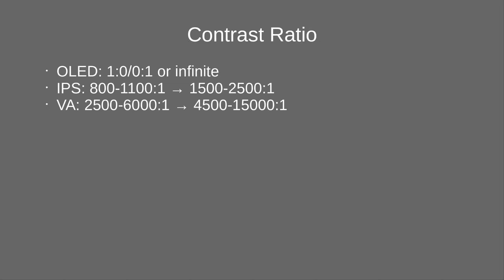Here are some examples. The IPS contrast ratio doesn't get much better with mini-LED, but the VA contrast ratio can get quite a lot better. It depends on the backlight — sometimes even VA panels only went from 4,000 to 4,500, or IPS went from 1,100 to 1,200 or 1,300, so it's not always guaranteed to improve significantly. That 15,000 to 1 figure is from a very expensive VA panel we'll look at shortly. Most mini-LED backlights don't have enough local dimming zones to reliably show black and white right next to each other, but as technology improves with 1,000 or 2,000+ dimming zones, these numbers will get better.